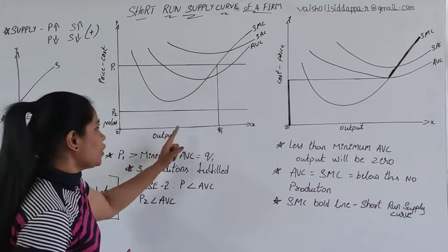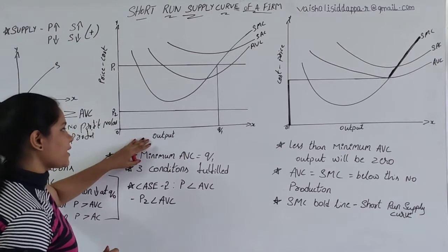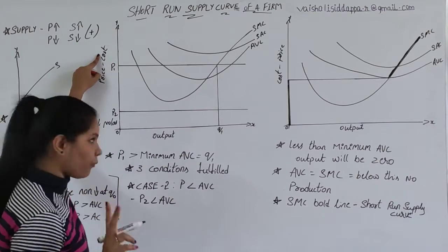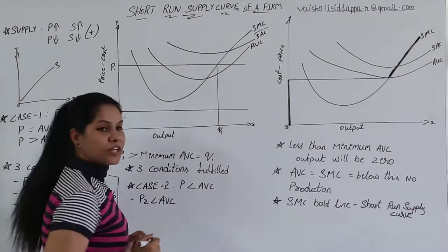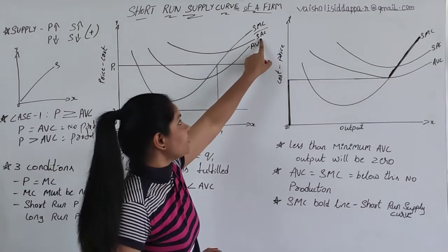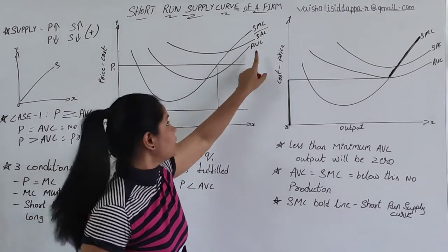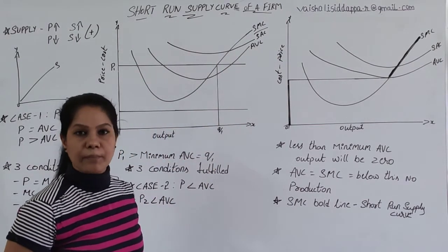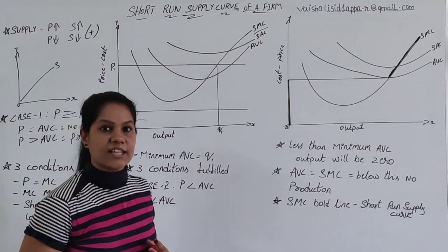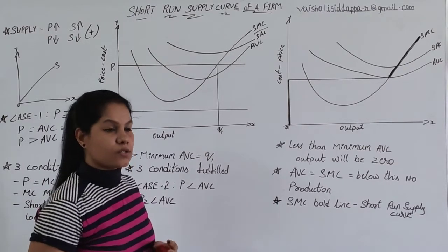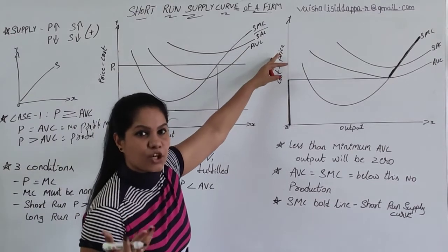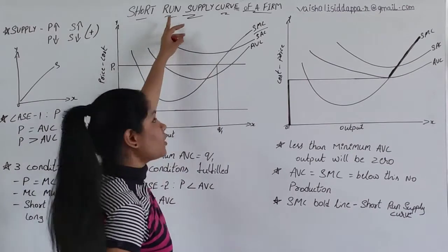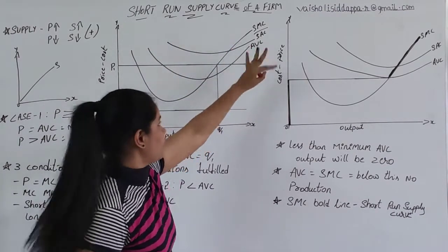In this diagram, the x-axis has output and the y-axis has price and cost. SMC is short-run marginal cost, SAC is short-run average cost, and AVC is average variable cost. We have studied these all in the third and fourth chapters — these are short-run cost concepts.